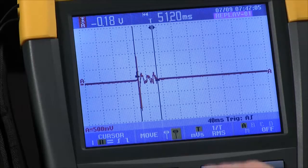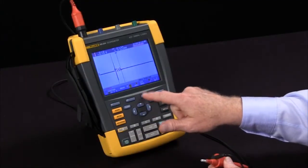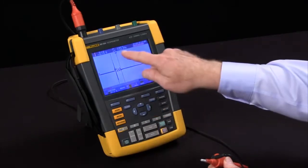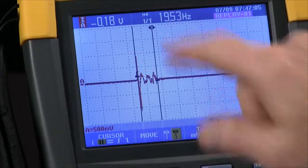If I wanted to know the frequency I could press the F3 key to toggle from time to 1 over time and actually see the frequency at 19.53 hertz.